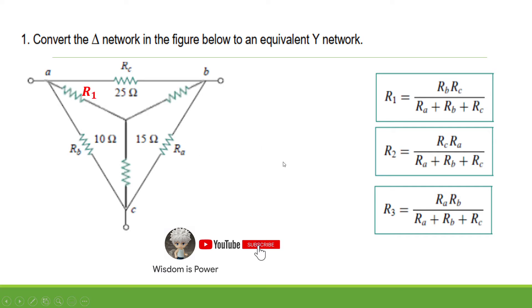First, let's solve R sub 1. R sub 1 will become 10 multiplied by 25, that is the two adjacent Delta resistors, then divided by the sum of all the resistors in the Delta network. That is 15 plus 10 plus 25, which equals 250 divided by 50. So R sub 1 is equal to 5 Ohms.